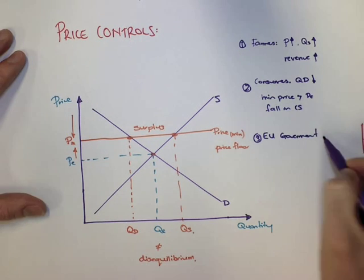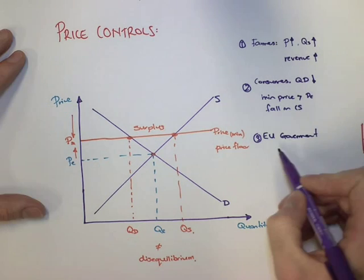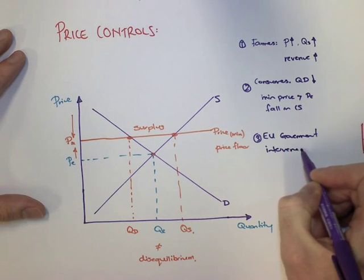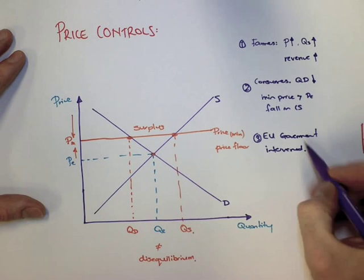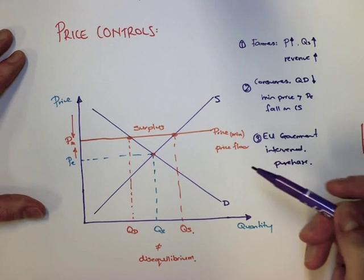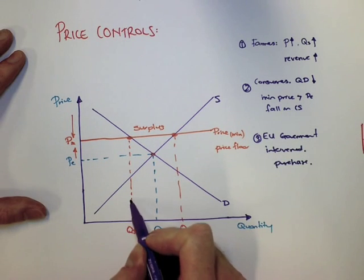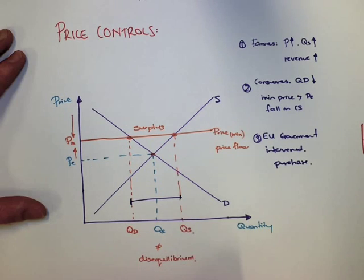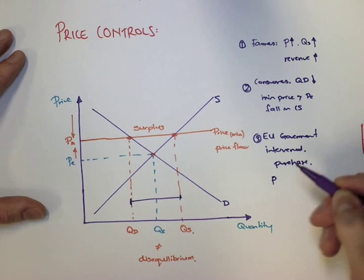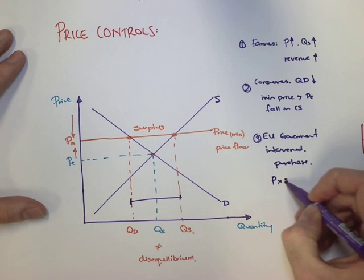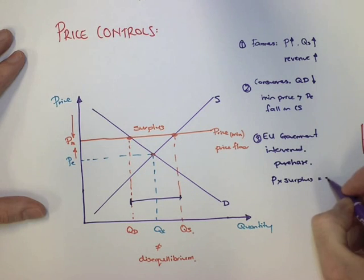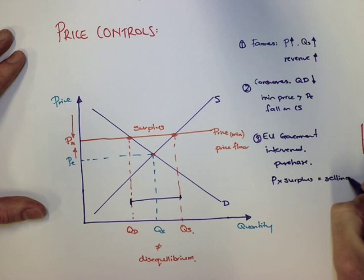The third group is the EU government. They're interesting because they have to intervene in the market. They must purchase the excess quantity from the farmers, so they end up purchasing the difference between quantity demanded and quantity supplied. There's a cost of that: the price they have to pay in the market times the amount of the surplus. Sometimes they purchase this and then sell it abroad, sell overseas as an export to other countries to recoup the money.